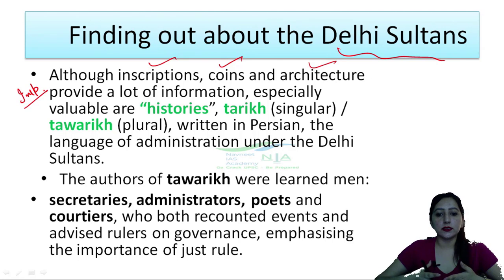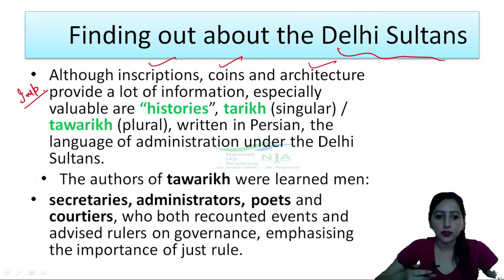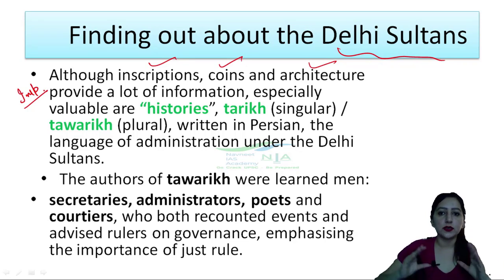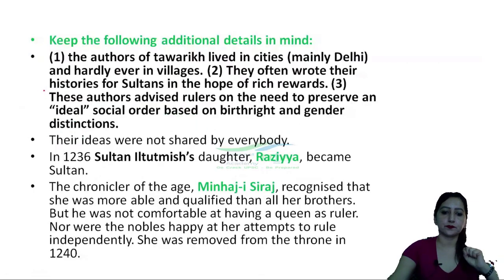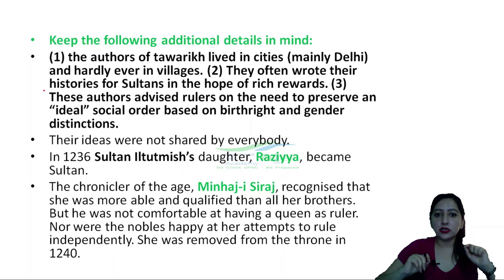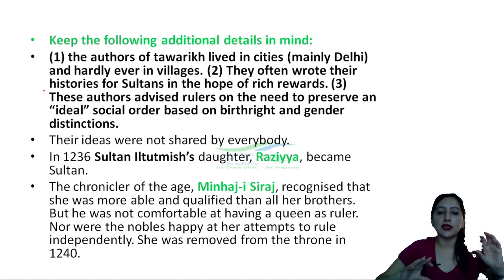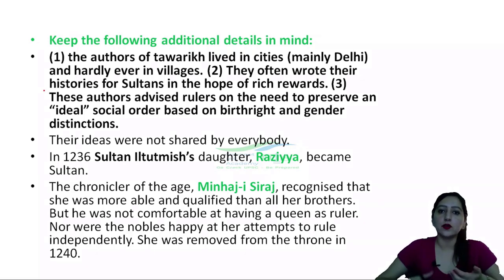These were people who both recounted events and advised the rulers on governance. They had seen the events firsthand and gave advice on how to run the rules and governance — emphasizing the importance of just rule. However, these authors mostly wrote Sultan's histories for rewards, so obviously they would write good things about the rulers if they were writing for rewards.